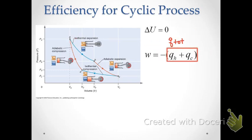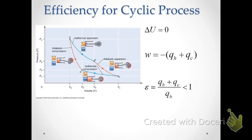Therefore W equals negative Q_H plus Q_C, because heat goes into the system in step one and out of the system in step three, while steps two and four are adiabatic with no heat transfer. So the total heat transferred equals Q_H plus Q_C. Remembering that efficiency equals negative W over Q_H, we substitute Q_H plus Q_C to get a new equation for efficiency based on heat transfer.